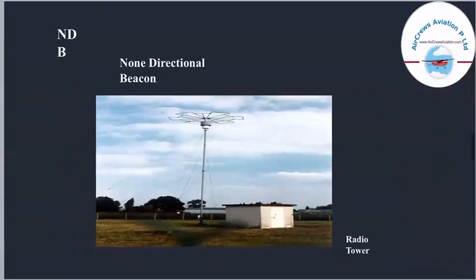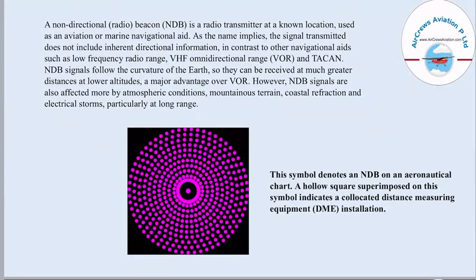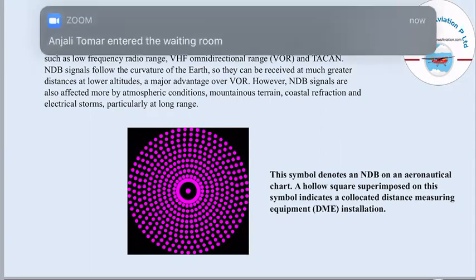Coming to the third, that is NDB — Non-Directional Beacon. In this picture we can see a photo showing a radio tower. NDB is a non-directional radio beacon, that is a radio transmitter at a known location, used as an aviation or marine navigational aid. As the name implies, the signal transmitted does not include inherent directional information, in contrast to other navigational aids such as low frequency range, VHF Omnidirectional Range, and TACAN. NDB signals follow the curvature of the earth, so they can be received at much greater distances at lower altitudes — a major advantage over VOR. However, NDB signals are also affected by atmospheric conditions, mountain terrain, coastal refractions, and electrical storms, particularly at long range.